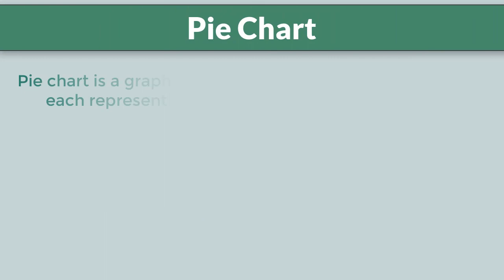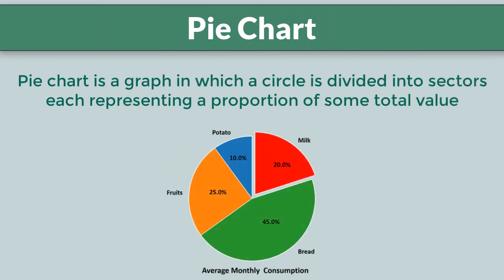What is a pie chart? Pie chart is a graph in which a circle is divided into sectors, each representing a proportion of some total value.